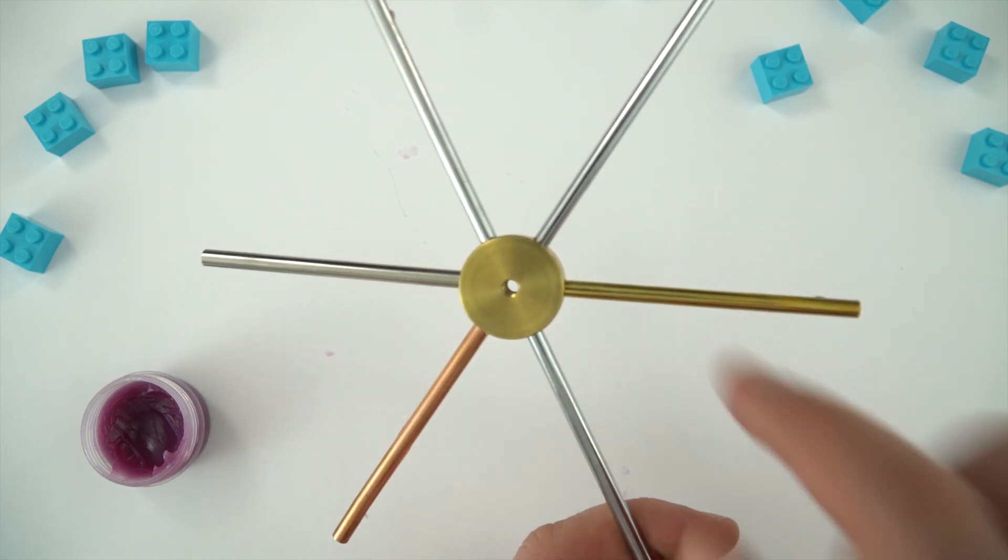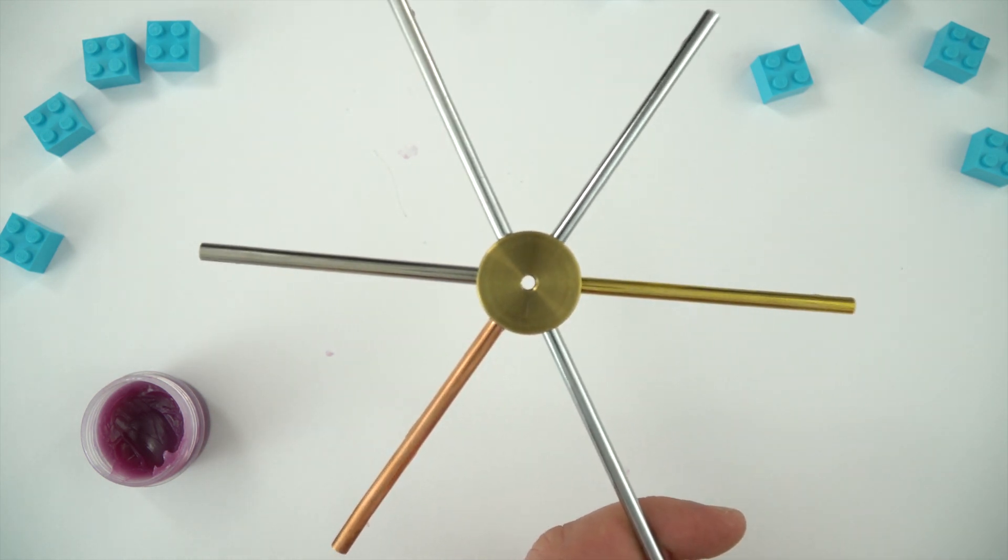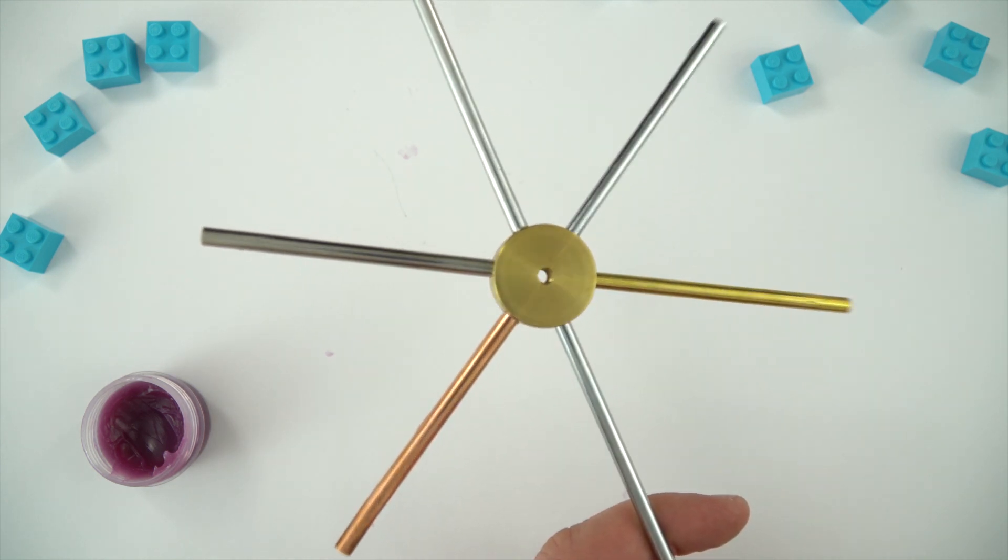Now again, if you were to do an investigation like this, we've got the same diameter rods, they're all the same length, and maybe you could then plot some data for the time it takes for the ball bearings to fall out of the ends.